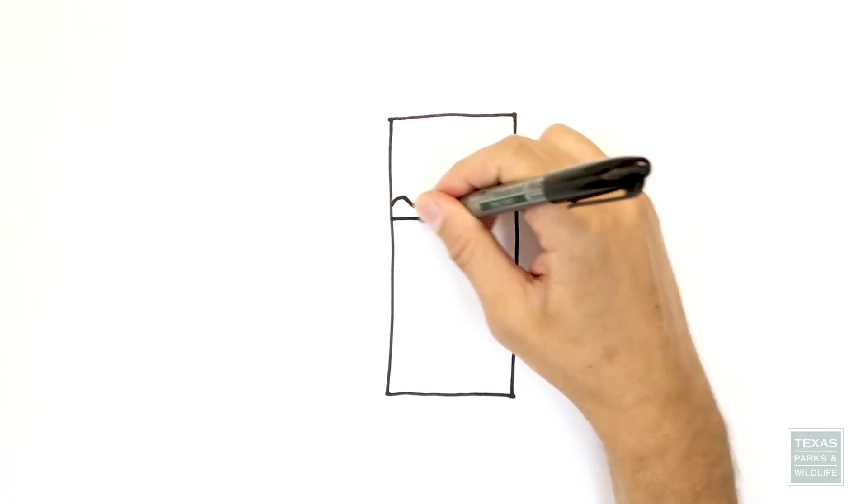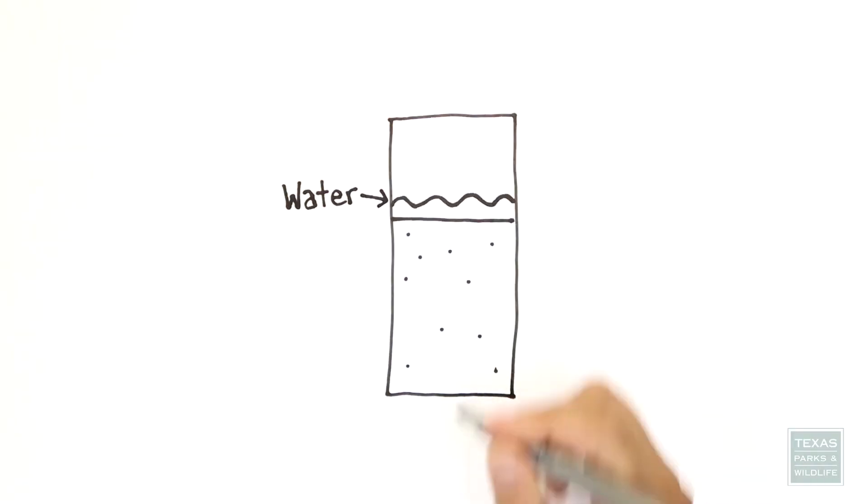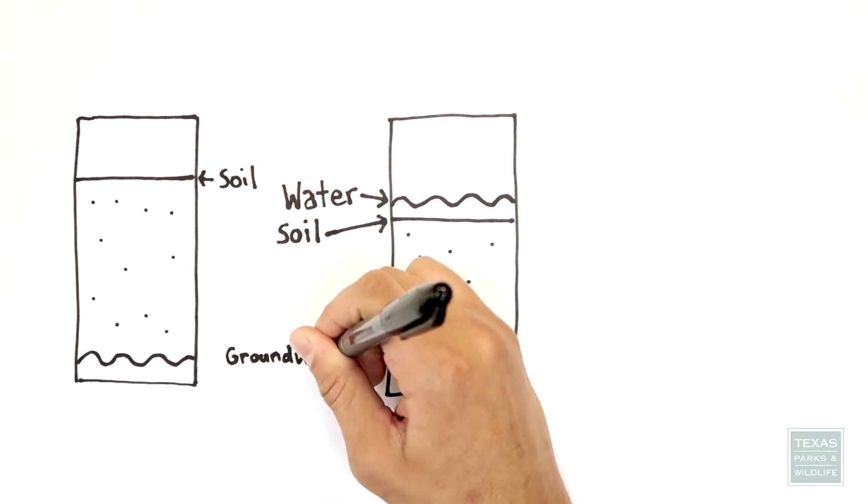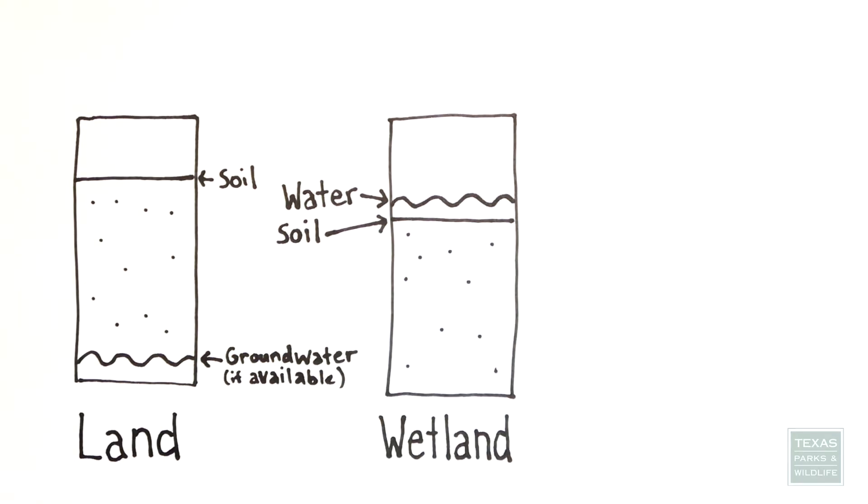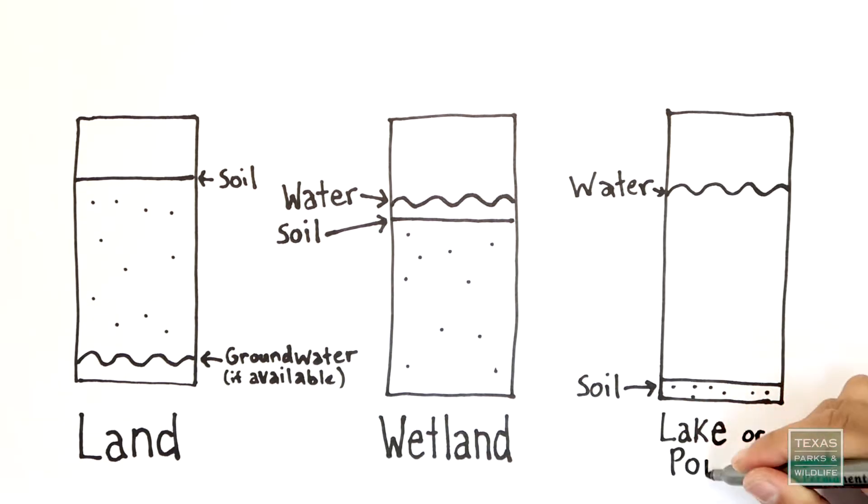Wetlands are low-lying areas of land where water settles, gathers, and stays at or near the surface of the soil. Wetlands are kind of an in-between place for water. If water runs off, then it's just regular old land. But if the water's too deep, then it might be a pond or a lake.